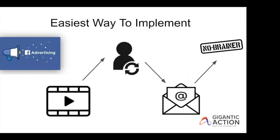The easiest way to implement this in your business, even if you are new to online marketing, is with Facebook advertising. You run video view ads and build a through-play audience. You retarget those audiences to an opt-in page, you send them some value emails, and then you retarget them to offers with emails and, of course, Facebook ads.